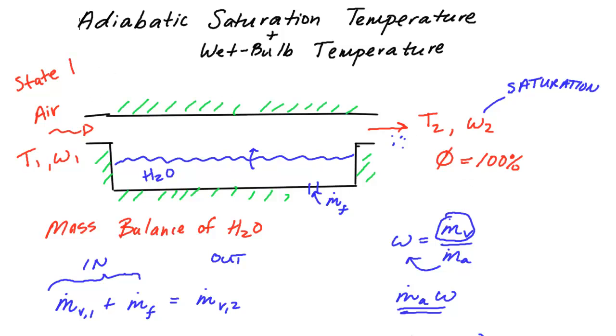In the last video we were discussing the adiabatic saturation temperature and we were talking about this kind of setup with a long channel where we're evaporating water into an air stream. When the air gets to the very end it's at saturation and we wanted to be able to determine that inlet absolute humidity ratio along with that final temperature T2.